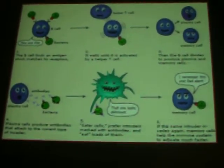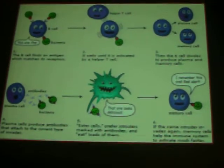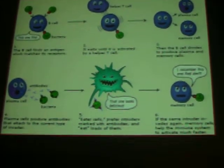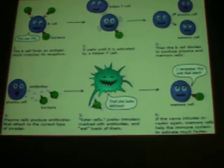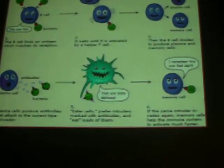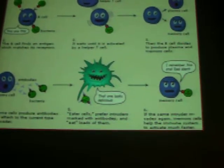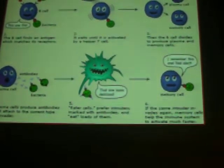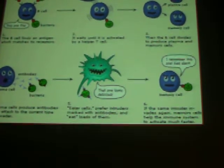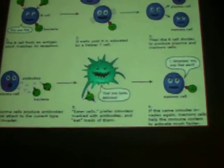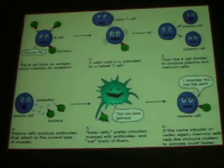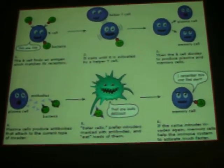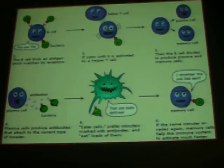This diagram explains how B cells attack bacteria or foreign antigens. In the first step, the B cell finds an antigen which matches its receptors. Secondly, it becomes activated by helper T cells. Then the B cell divides to produce plasma cells and memory cells. Plasma cells produce antibodies that attach to the specific type of antigen, leading to clonal deletion.